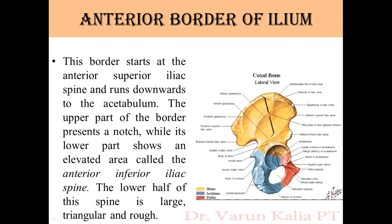The anterior border starts at the anterior superior iliac spine (ASIS) and runs downward to the acetabulum. The upper part of the border presents a notch, while its lower part shows an elevated area — the anterior inferior iliac spine (AIIS). So going down from ASIS, we first encounter a notch, then below that an elevation which is the anterior inferior iliac spine.